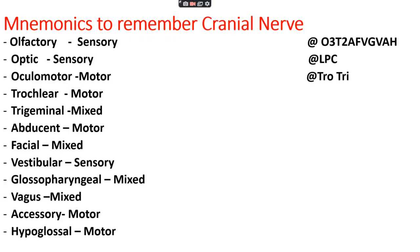Third, there is a mnemonic to remember the cranial nerves, which originate from the brain. The cranial nerves are: olfactory, optic, oculomotor, trochlear, trigeminal, abducent, facial, vestibular, glossopharyngeal, vagus, accessory, and hypoglossal. The mnemonic is 'O-cube T-square Fagvus', where O-cube covers olfactory, optic, and oculomotor; T-square covers trochlear and trigeminal; and Fagvus covers facial, vestibular, glossopharyngeal, vagus, accessory, and hypoglossal.